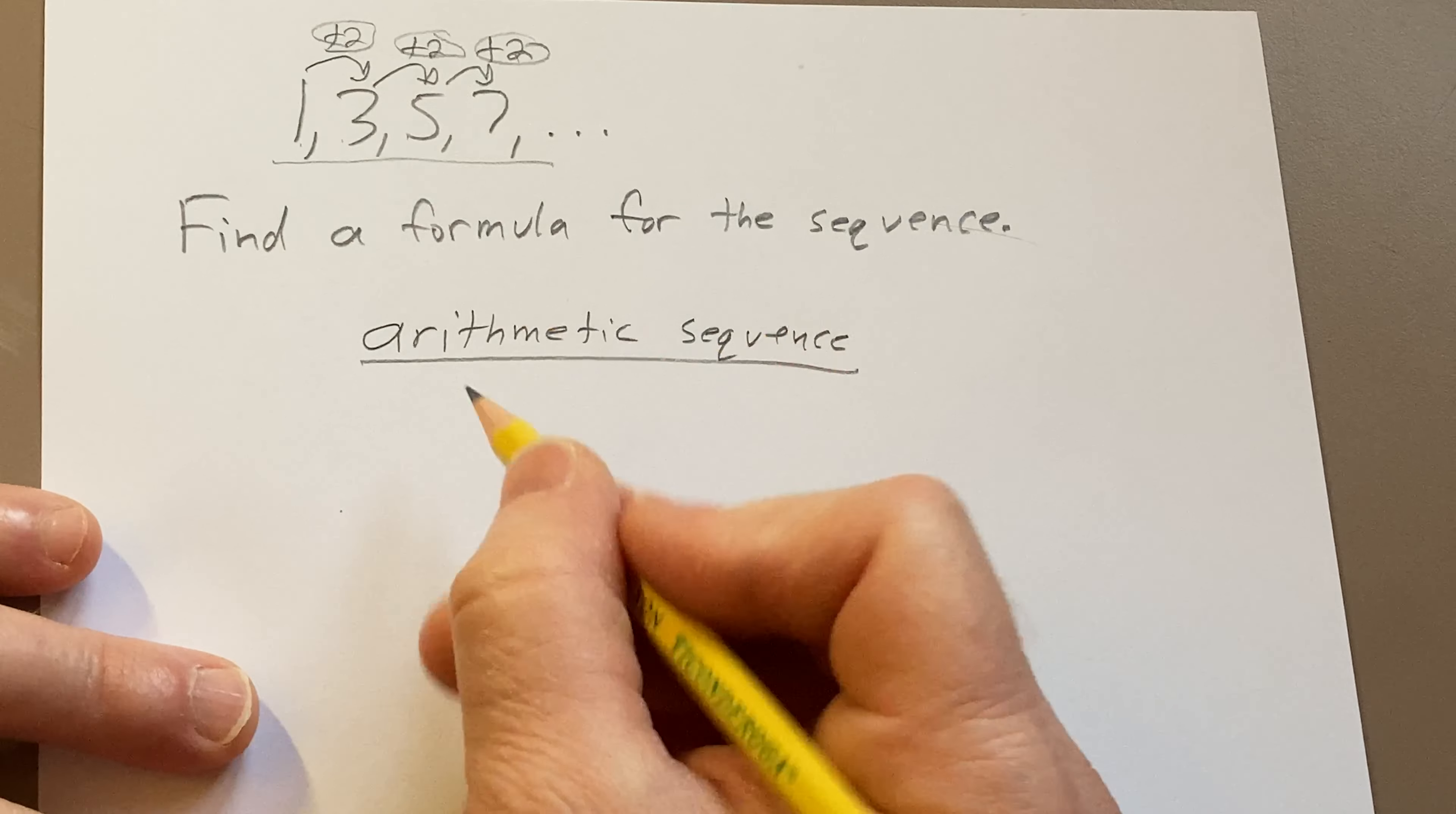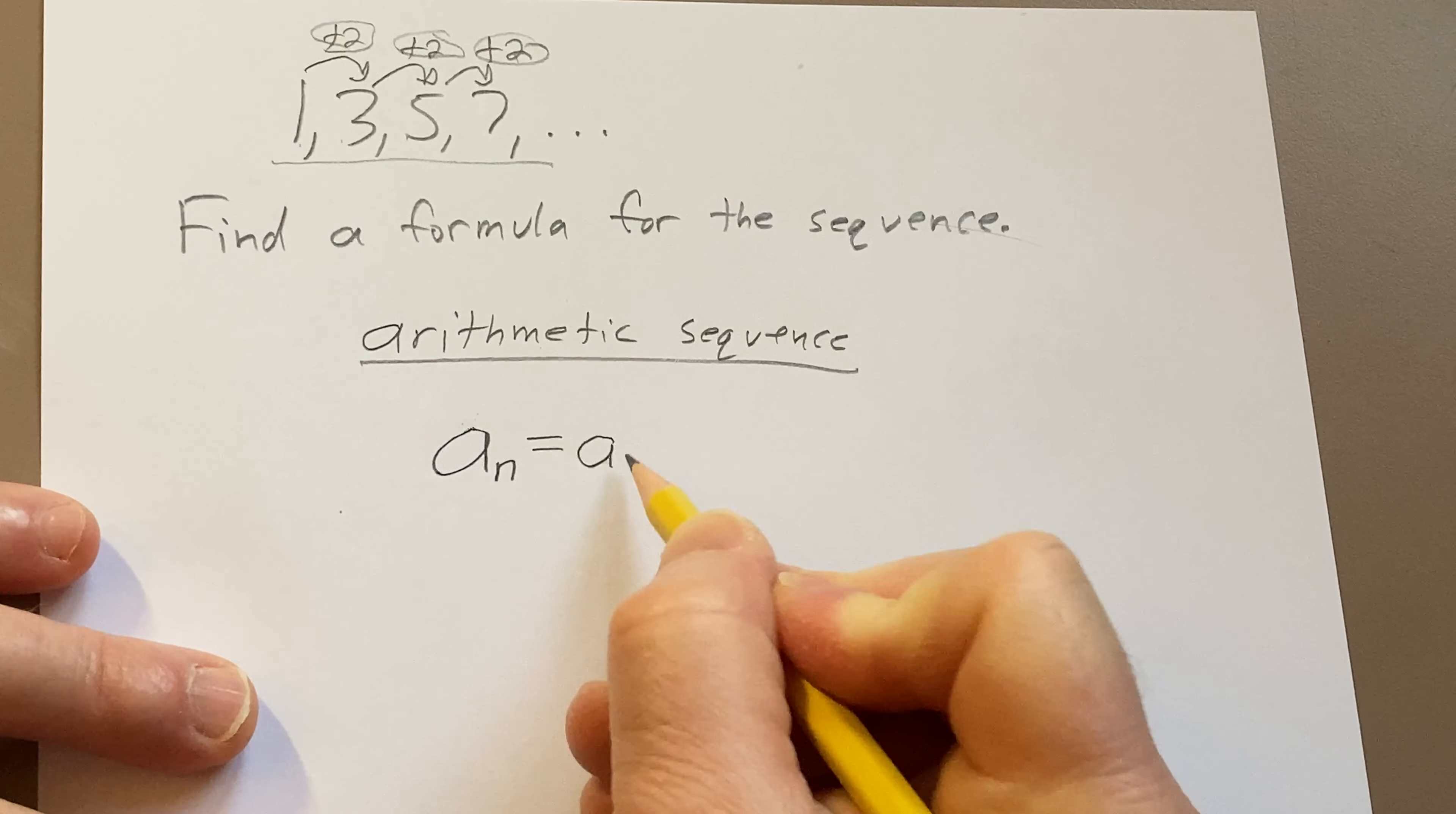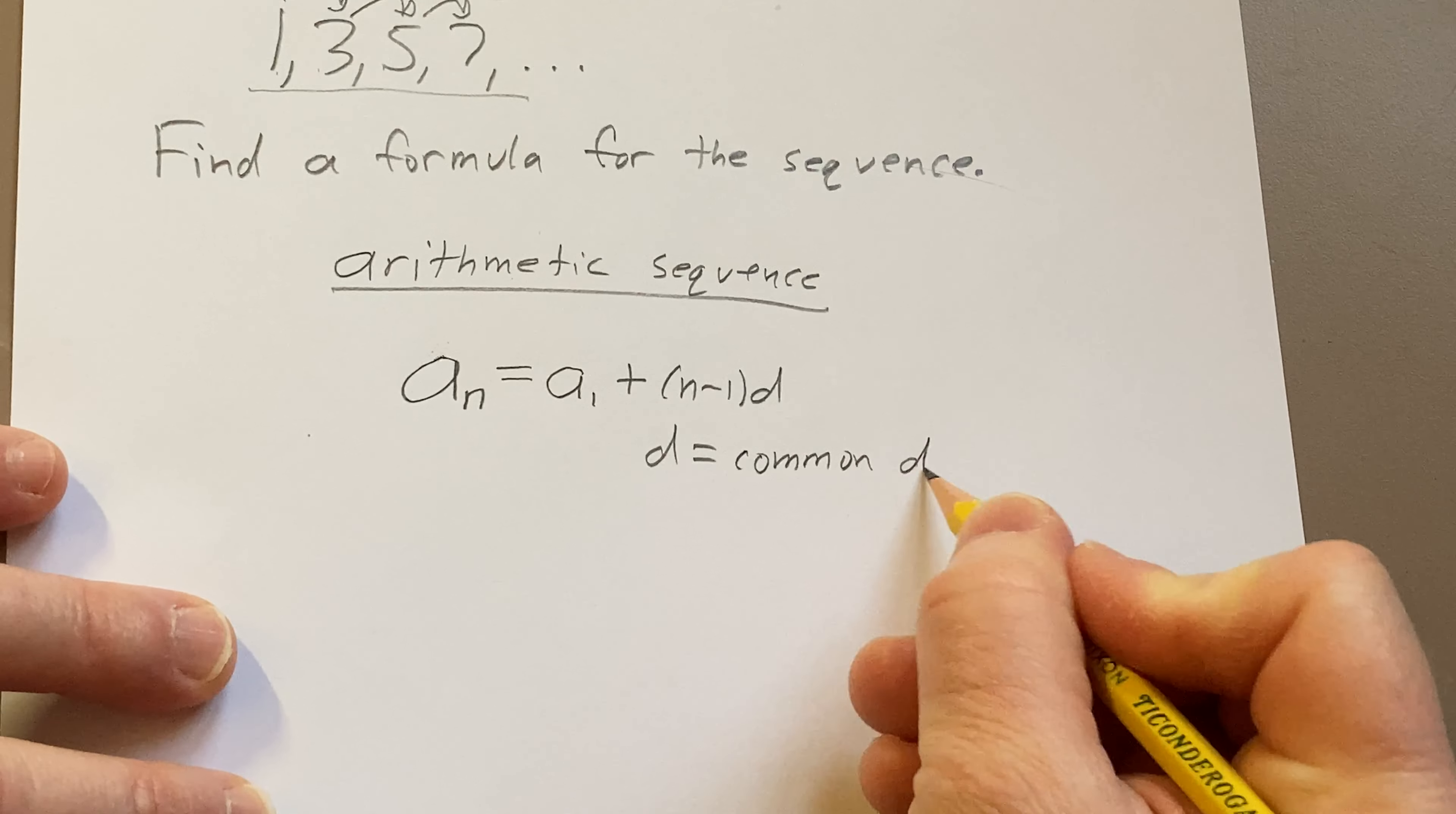It says that the nth term, and typically we use a for this, but you can use x, but I'll use a. The nth term of an arithmetic sequence is equal to the first term plus n minus 1 times d. Where d has a name, it's a special name, it's called the common difference.